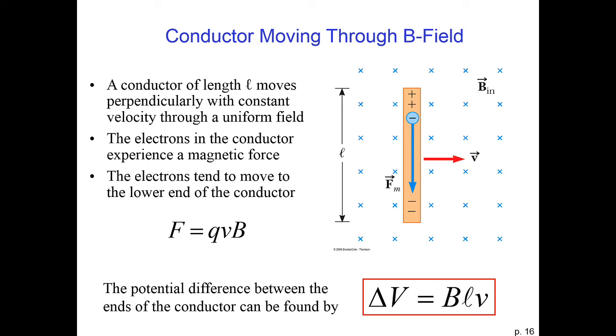Then we can find the voltage across the metal bar, which is equal to the magnetic field strength times the velocity times the length of the bar. That means we can create a voltage across this bar by moving it through a magnetic field. Notice this is not a current.